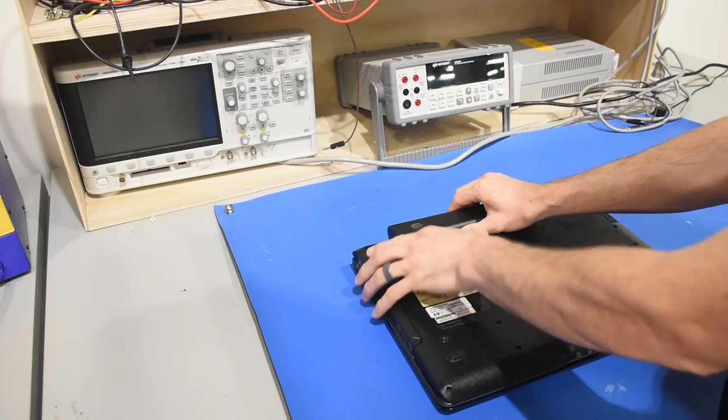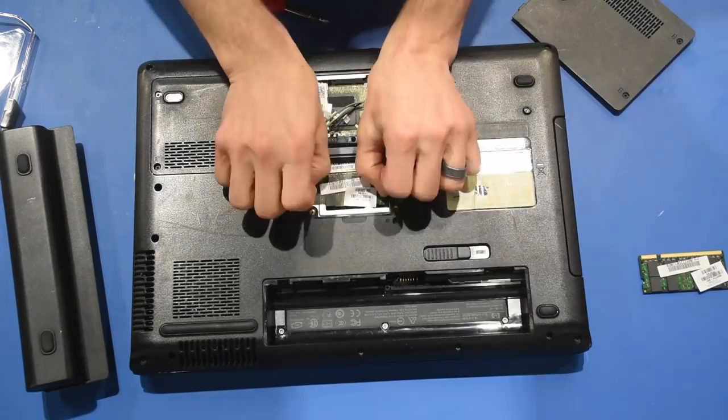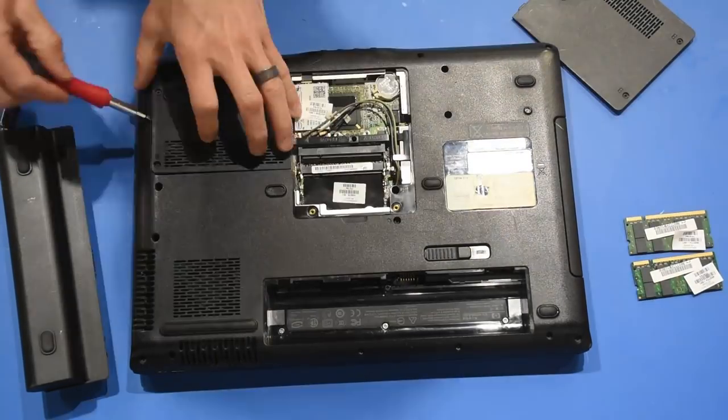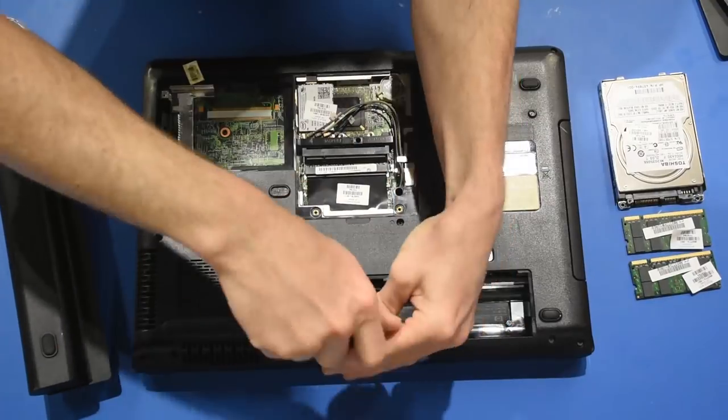I tore apart my old HP. I started by removing components that I might need later, like the RAM and the hard drive. I'm hoarding hard drive platters because I'm either going to build a telescope or a death ray. I haven't decided which.